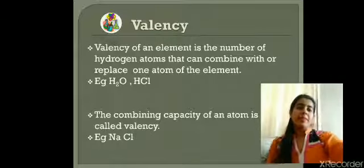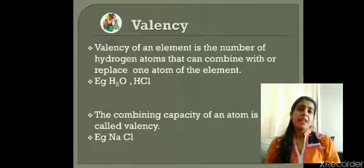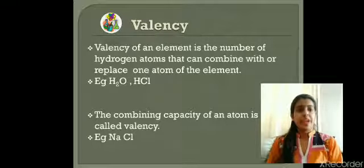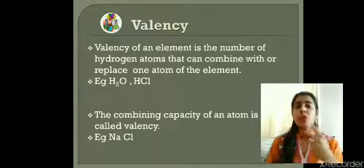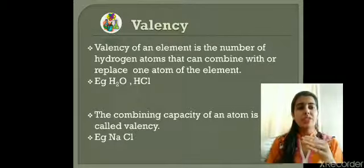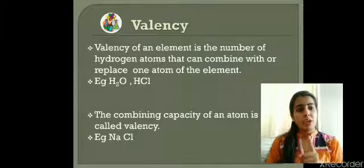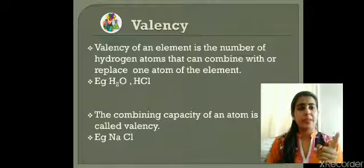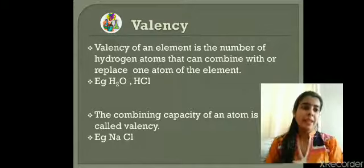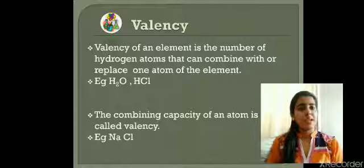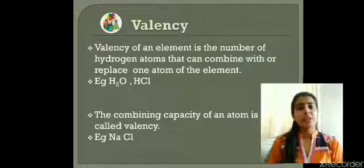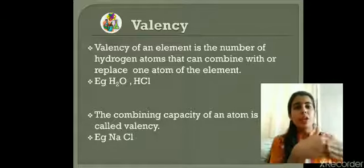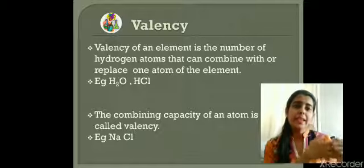Valency is a term that defines the combining capacity of an atom — with how many atoms a particular atom can combine. Hydrogen has a valency of one: in HCl, hydrogen combines with one atom of chlorine. Valency can also be defined in terms of how many hydrogen atoms an element will combine with or replace. Overall, valency defines the combining capacity of an atom.